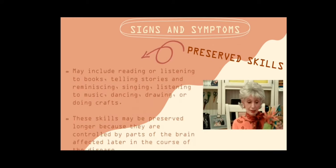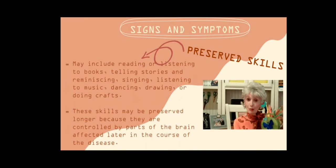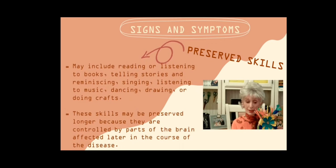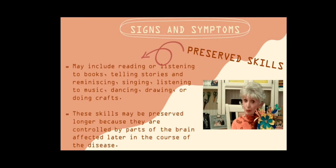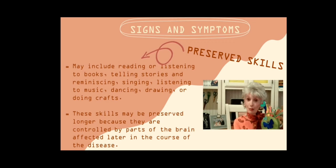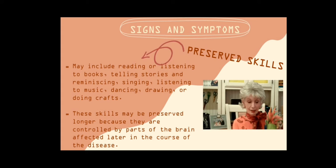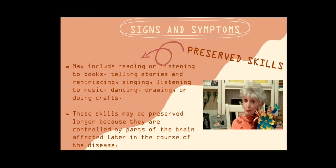Irritability. Activities that may be preserved include reading or listening to books, telling stories, reminiscing, singing, listening to music, dancing, drawing, or doing crafts. These skills may be preserved longer because they are controlled by parts of the brain affected later in the course of the disease.